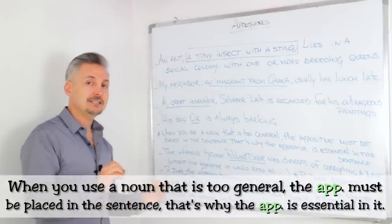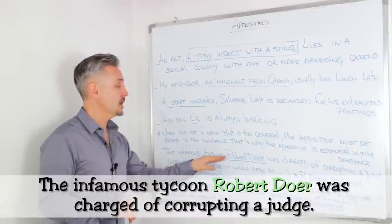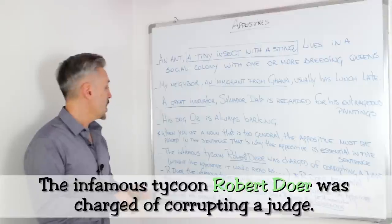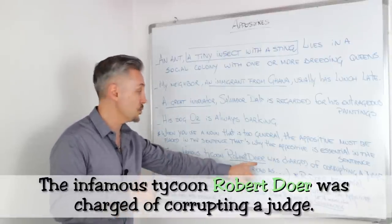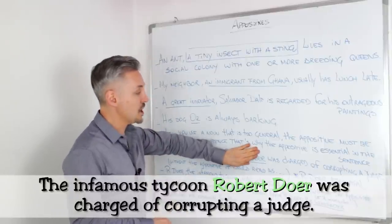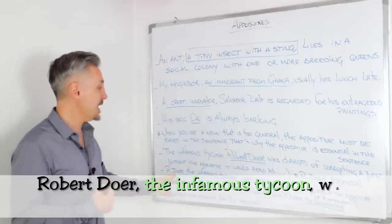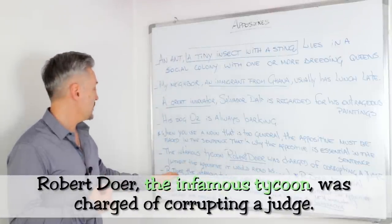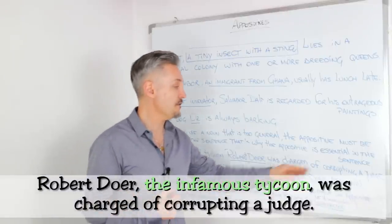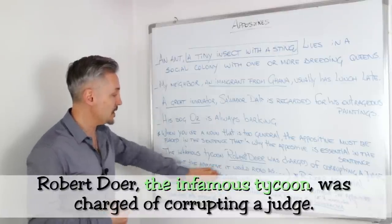Let's take a look at three examples. 'The infamous tycoon, Robert Dewar, was charged of corrupting a judge.' Without the appositive, which is 'Robert Dewar,' it would read as 'The infamous tycoon was charged of corrupting a judge.' Who is the infamous tycoon? Instead: 'Robert Dewar, the infamous tycoon, was charged of corrupting a judge.' And in this case, 'the infamous tycoon' would be the appositive.